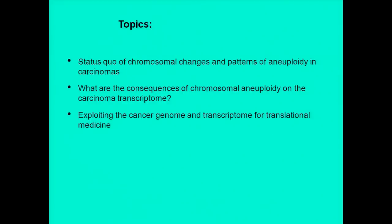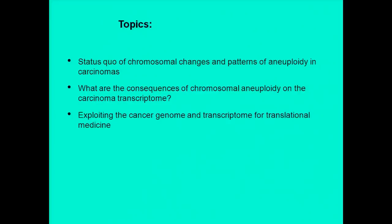In the first third or half of my talk, I'll discuss what we know about chromosomal changes and patterns of aneuploidy in carcinomas — essentially as an introduction to the second topic, where I discuss briefly what the consequences of these cytogenetic abnormalities are on the transcriptome and gene expression in cancer cells. Then I'll explore what we can do to translate what we've learned to translational medicine, both in terms of genomic aberrations and alterations of the transcriptome.